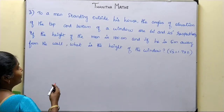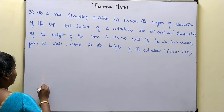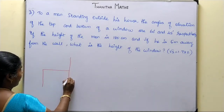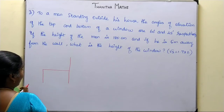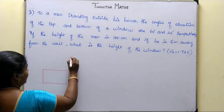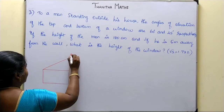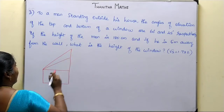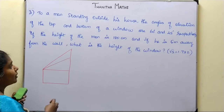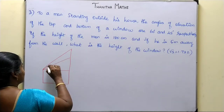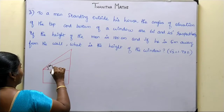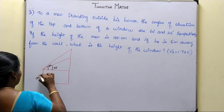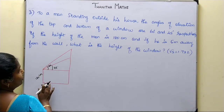A man's height is 180 centimeters. In the horizontal line of sight, we identify the top and bottom of the window. The angle of elevation to the top of the window is 60 degrees, and the angle of elevation to the bottom of the window is 45 degrees. The distance between the wall and the man is 5 meters. We need to find the height of the window.